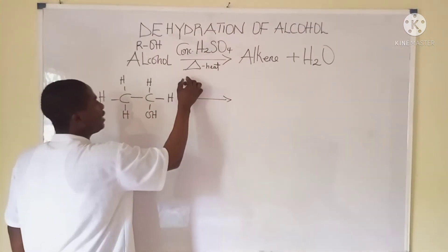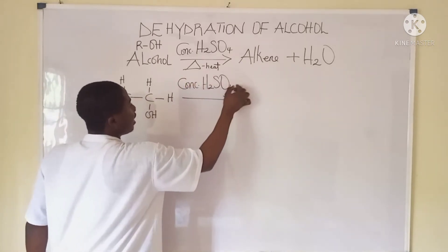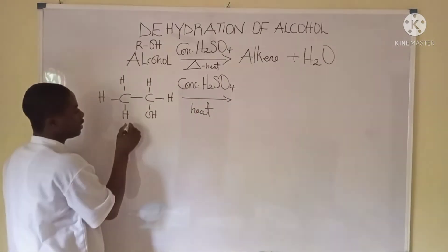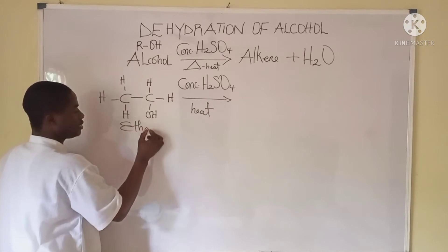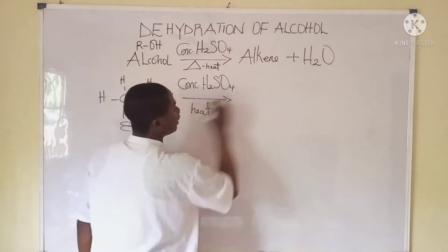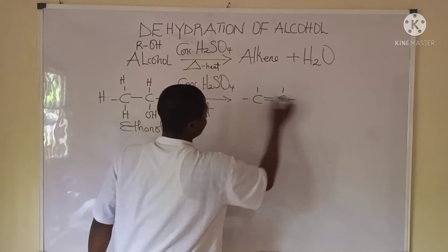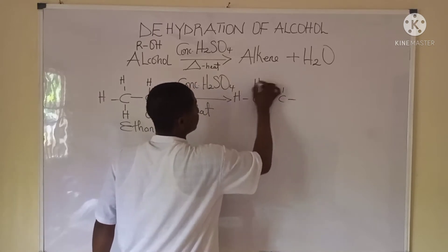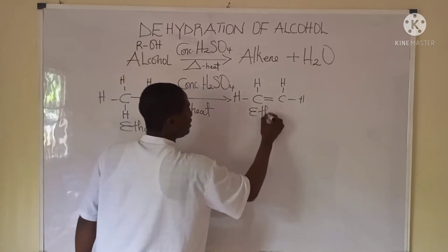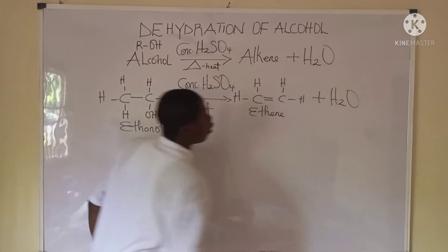The dehydrating agent is concentrated sulfuric acid in the presence of heat. This alcohol here is called ethanol — it has two carbons with the hydroxyl group. Our product prepared will be ethene, which is the alkene, and there will also be elimination of water.